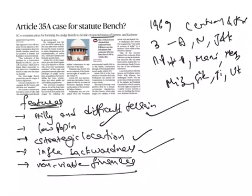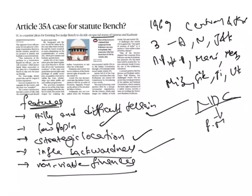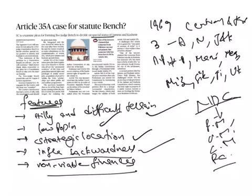The last feature is the non-viable nature of state finances. The decision to grant special category status lies with the National Development Council, composed of the Prime Minister, Union Ministers, Chief Ministers, and members of the Planning Commission, who guide and review the working of the Planning Commission. The article also mentions constitutional provisions like Article 35A, Article 370, and Article 368.